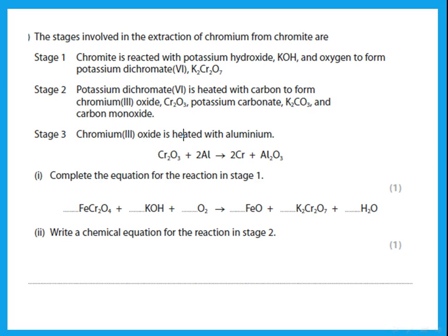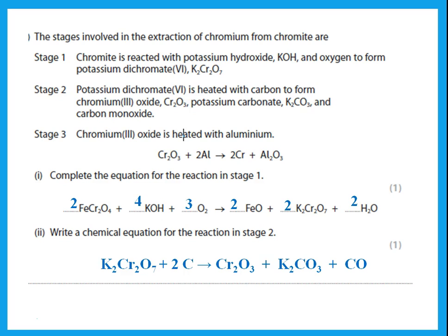The stages in the extraction of chromium from chromite are given. Complete the equation for stage 1 by balancing — the required coefficients are provided after working through it. For stage 2: potassium dichromate K2Cr2O7 is heated with carbon to form Cr2O3, K2CO3, and carbon monoxide. You will find that you need to put 2 in front of carbon in order to balance the equation.